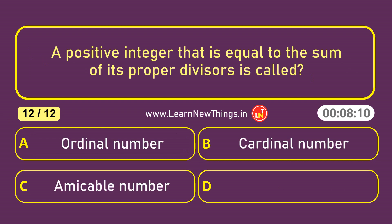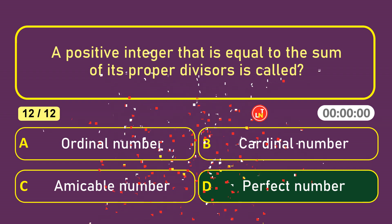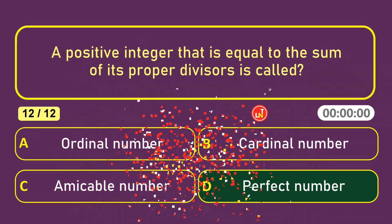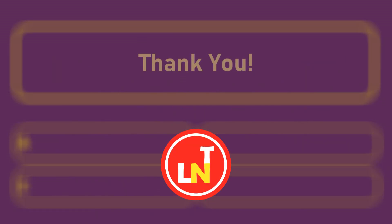A positive integer that is equal to the sum of its proper divisors is called a Perfect Number.